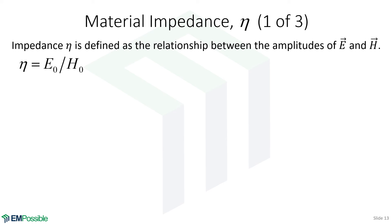Material impedance is defined as the ratio of the complex amplitude of the electric field divided by the complex amplitude of the magnetic field. Picture it this way: you've got some medium that a wave is propagating through, and the electric field is pushing on that medium. That medium and the coupling between E and H will respond with some magnetic field, which can have a different amplitude and phase relative to the electric field. So the impedance can be a complex number — it's complex because both amplitude and phase of E and H can be different.